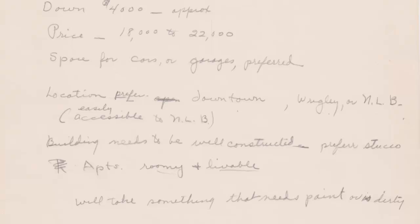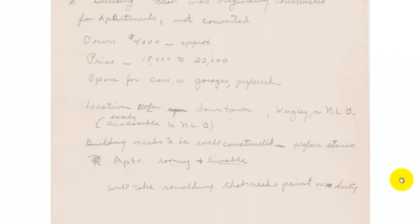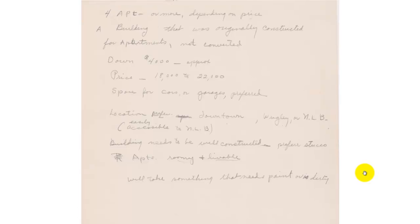This demonstrates the importance of preparing written criteria for your investment. If you don't write it down, then it's not firm and any shiny object that comes along will distract you. Always write down your criteria in terms of what the building is, where it is located, and the pricing and the yields that you want.